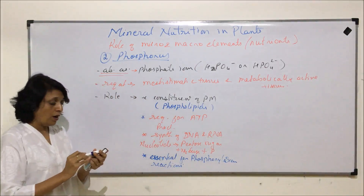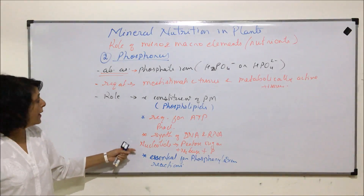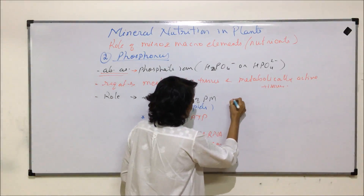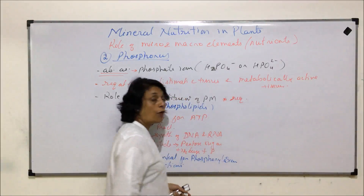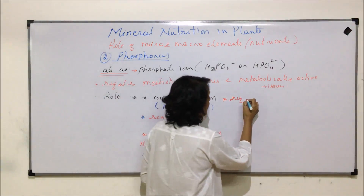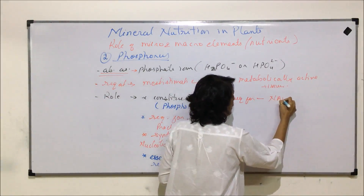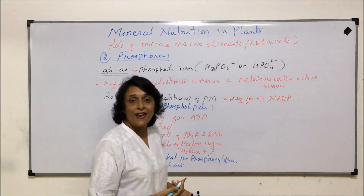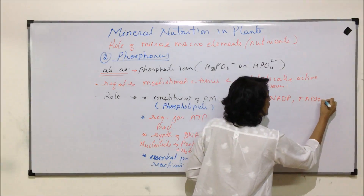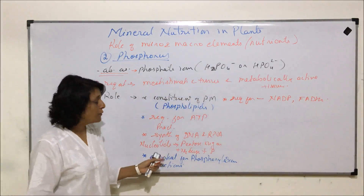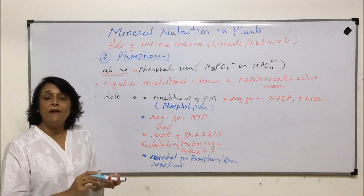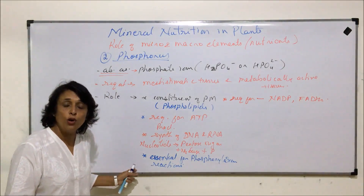One more role where phosphorus is required is for the formation of coenzymes like NADP, FAD, and FADH2. All these molecules require phosphorus in their structure. Now that we have understood where phosphorus is required and what role it performs, we will be able to understand the deficiency symptoms.